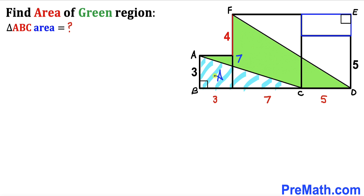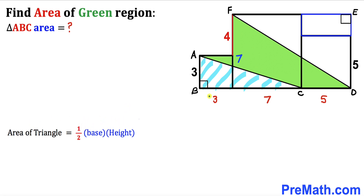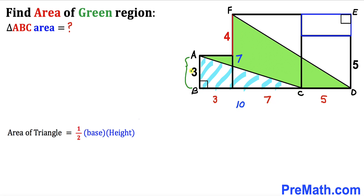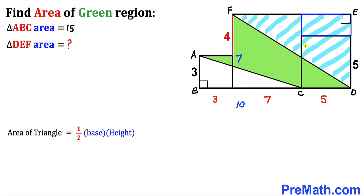Let's calculate the area of triangle ABC using the formula: area equals one-half times base times height. The base of triangle ABC is three plus seven, which equals ten, and the height is three. So the area of triangle ABC equals one-half times ten times three, which simplifies to 15 square units.